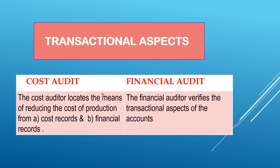Regarding transactional aspects, the cost auditor locates means of reducing the cost of production from cost records as well as financial records. He calculates whether cost has been properly determined at every stage of production and suggests how to reduce cost and maximize profit. The financial auditor, however, just verifies the transactional aspects of the accounts — whether your accounts and balance sheet are correct.